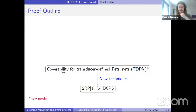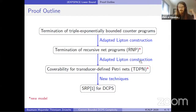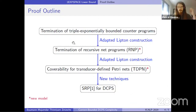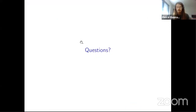The main result closes this complexity gap: the problem is also 2EXPSPACE-hard for k≥1, establishing 2EXPSPACE-completeness. The proof reduces from coverability for transducer-defined Petri nets — a new succinct representation of Petri nets introduced for this purpose — using novel techniques. They also prove coverability for this succinct representation is 2EXPSPACE-hard by adapting the Lipton construction, using another new model of recursive net programs as an intermediate step in a three-step reduction.